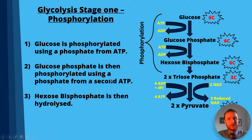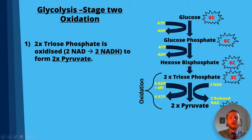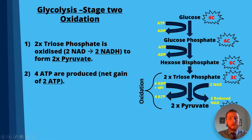Hexose bisphosphate is then hydrolyzed into two molecules of triose phosphate. In stage two, oxidation, the two triose phosphates are oxidized — oxidation is loss of electrons or protons — so two lots of NAD are used to make two lots of NADH, meaning two coenzymes have gained protons. This leads to the formation of two lots of pyruvate, and four ATP are produced, giving an overall net gain of two ATP because two ATP were used at the start.